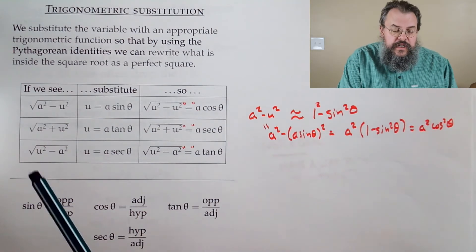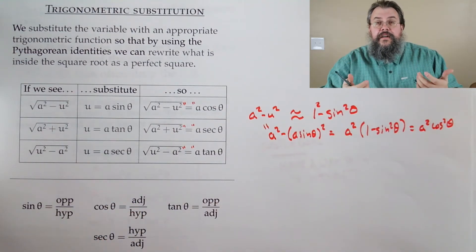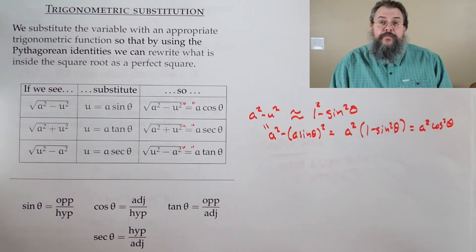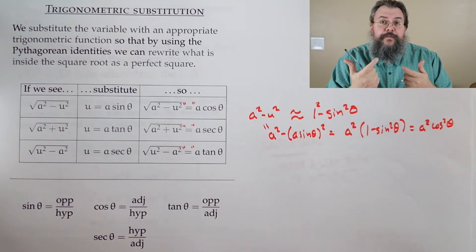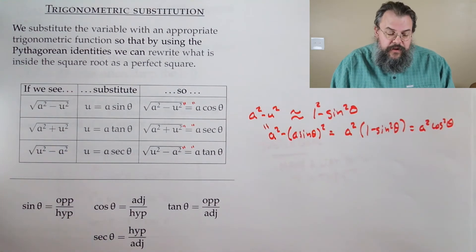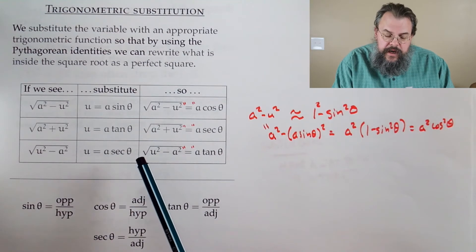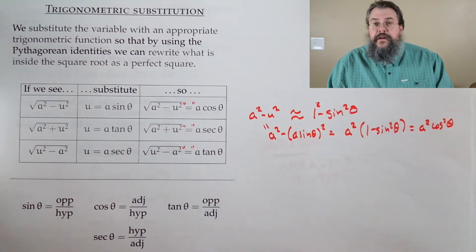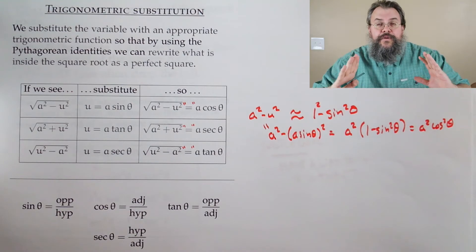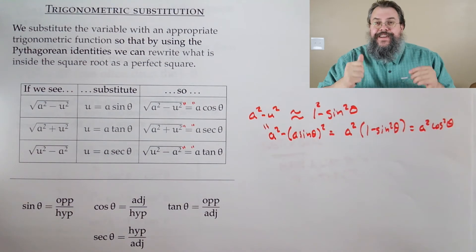If we have A squared plus U squared, we substitute tangent: U equals A tan θ. We get A² plus A² tan²θ. Factor out A², and 1 plus tangent squared equals secant squared. So the sum collapses into a single term. Life is good.